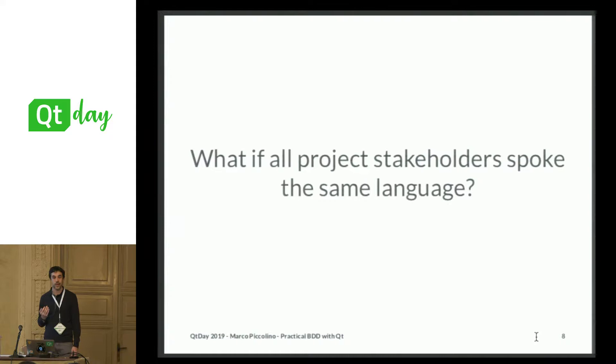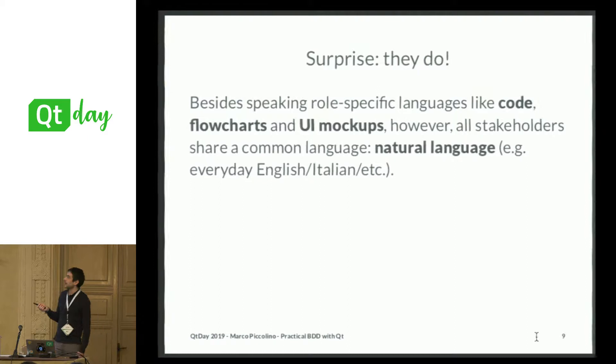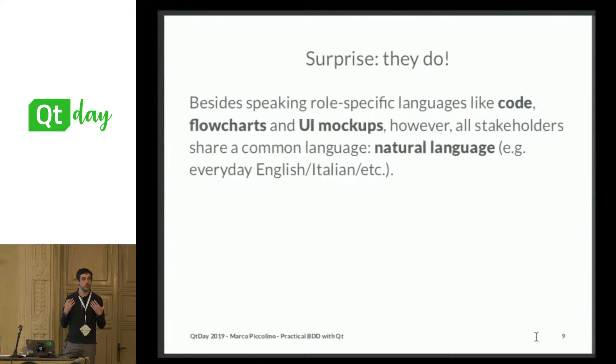The question is: what if all project stakeholders spoke the same language? That would be nice. If the customer spoke the same language as the developer, the UI designer, and so on. The surprise is that they do — because besides their role-specific languages like code, flowcharts, and mockups, they all share a common language, which is natural language. It can be English or Italian. Of course there must be some common natural language, but usually there is always one.